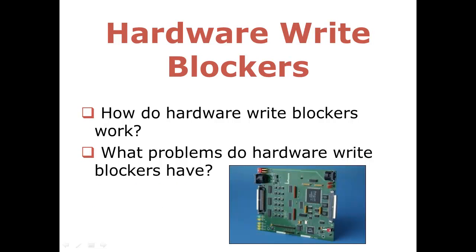Hardware write blockers do the same thing as software write blockers, just in a different way. Hardware write blockers receive program requests to overwrite sectors. The hardware blockers tell the operating system that the drive is read only, so the computer does not try to write on the disk. The blocker either tells the operating system that the write commands were failures, but this does not work on all computers because some computers don't listen to the blocker — they think all disks must be able to be written on. The computer could also store the commands in the cache while the hardware blocker is on.